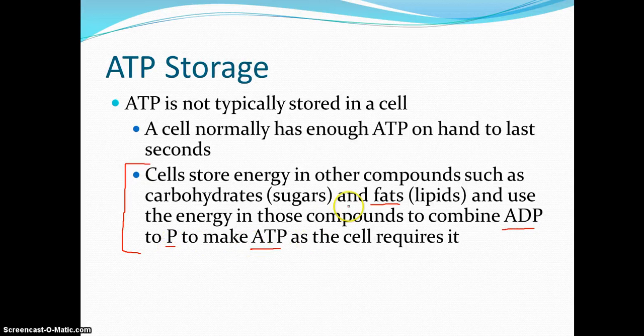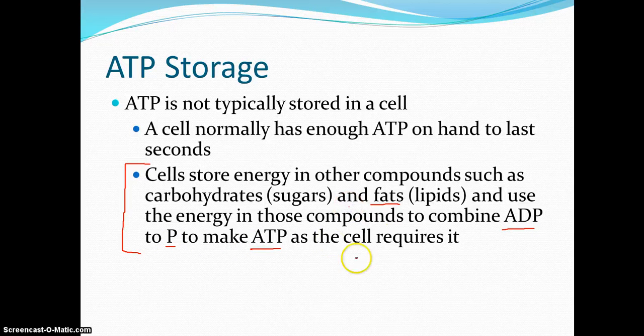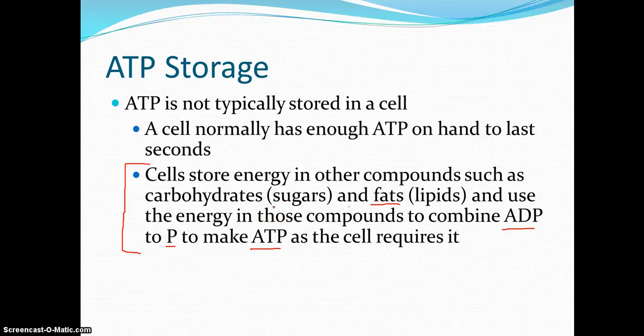And the energy comes from that by breaking down sugars and fats. When people are dieting, they try to avoid eating carbs and fats. Because you don't want to use what you're eating to fuel this thing. You want what's on your body to be used to combine those ADPs and those phosphates to make the ATP. So hopefully this weight loss example helps you understand what we're talking about here.